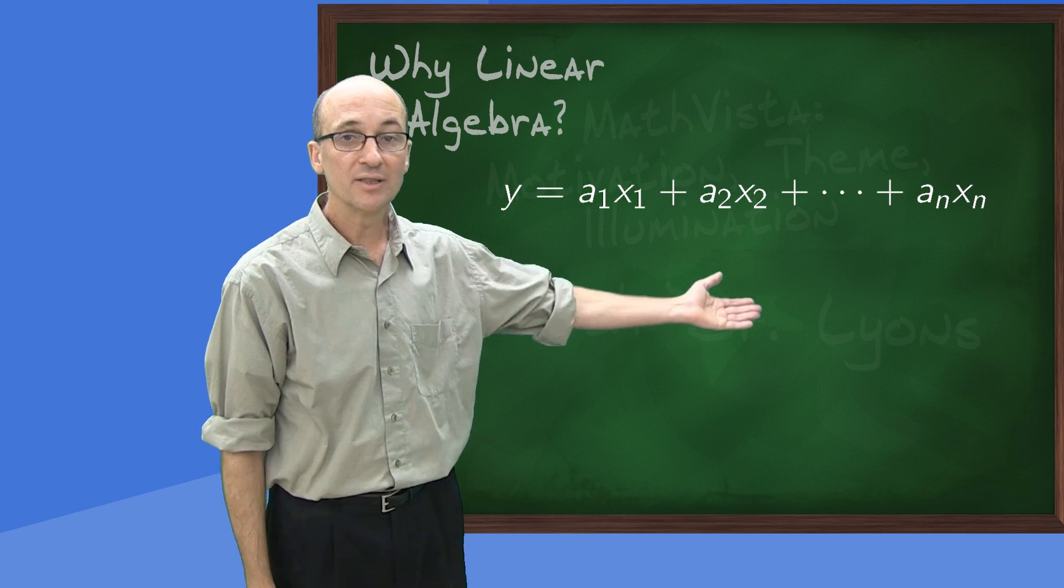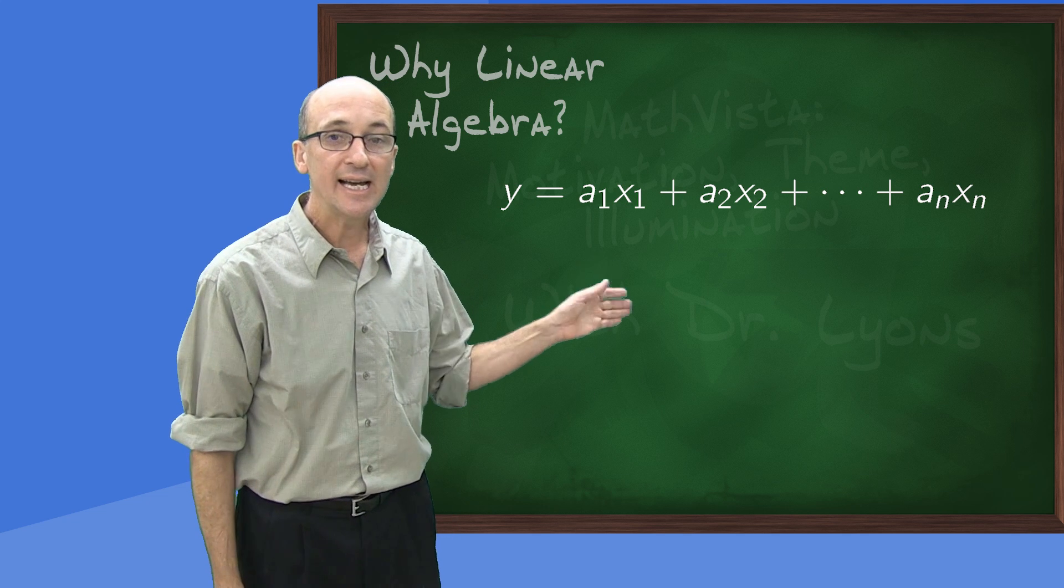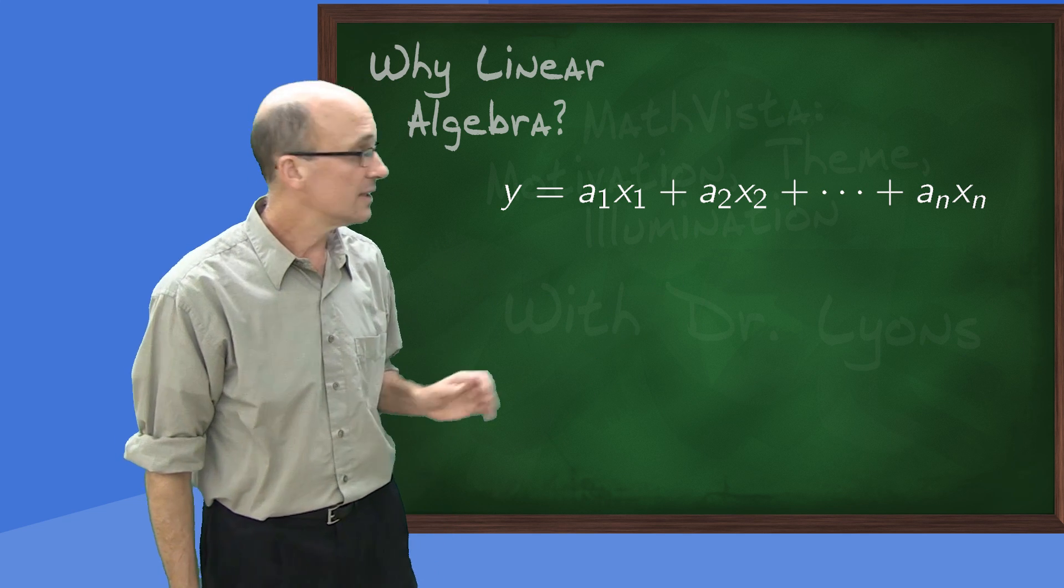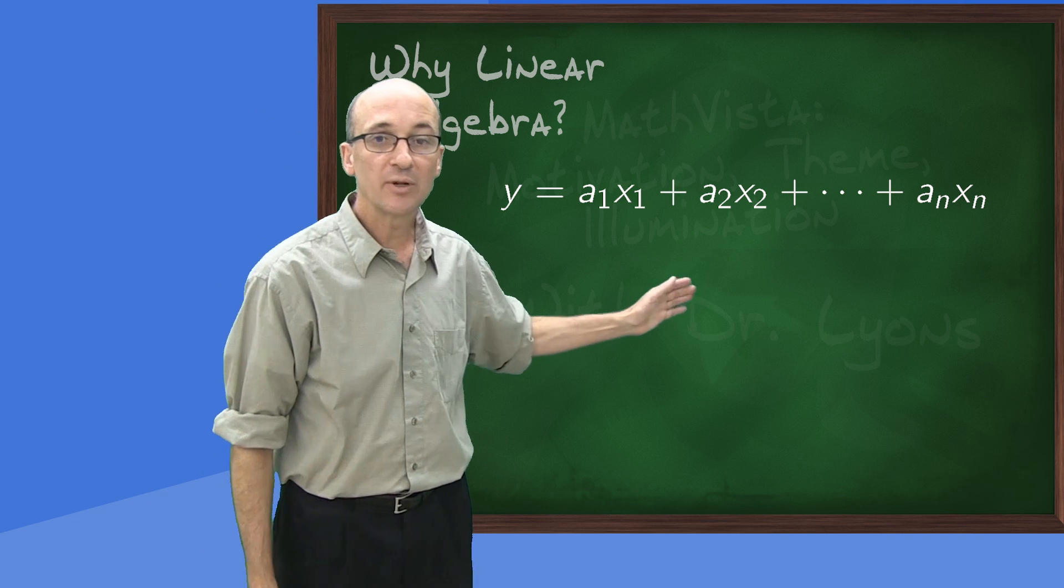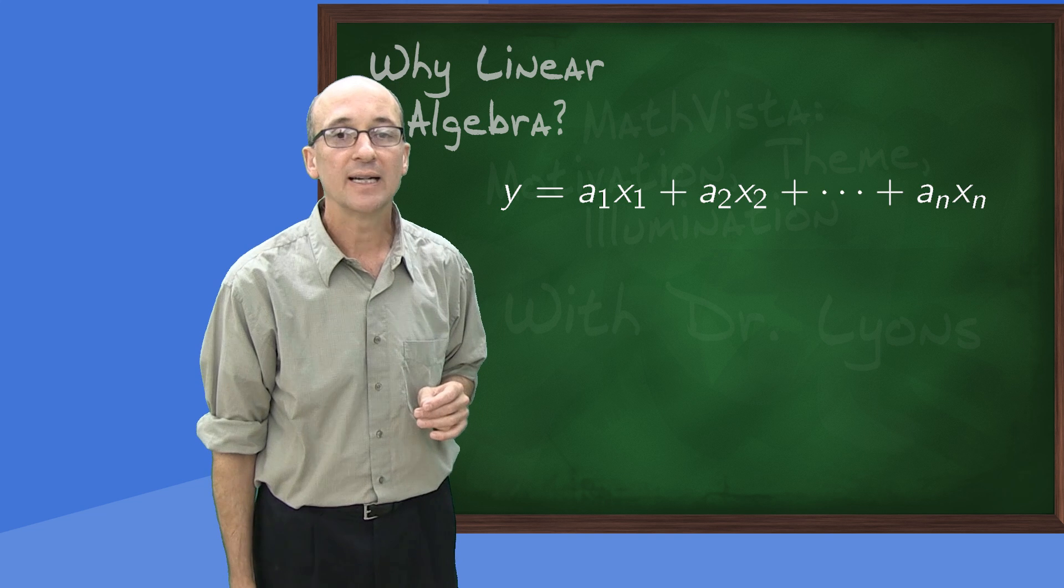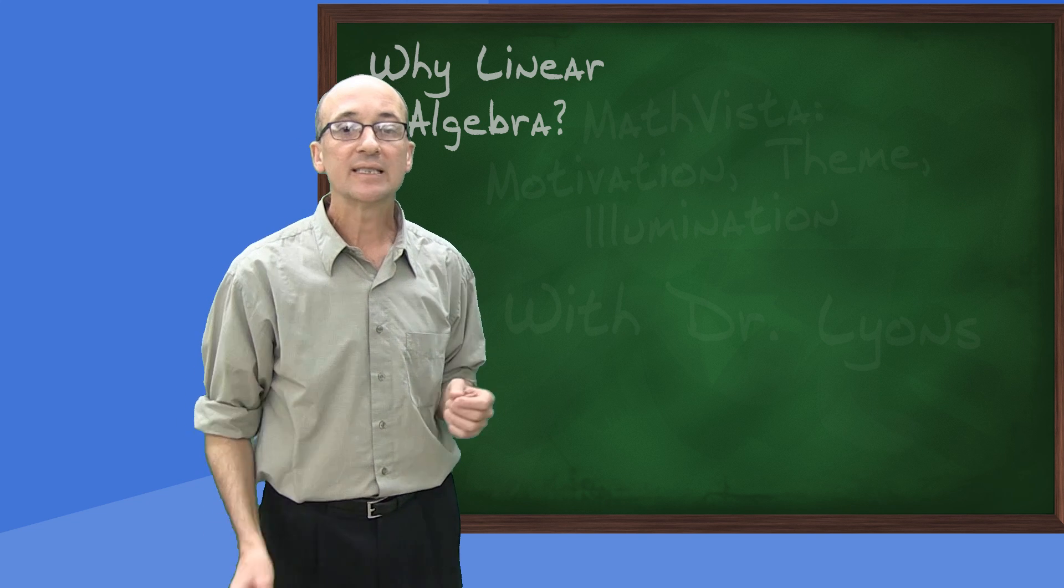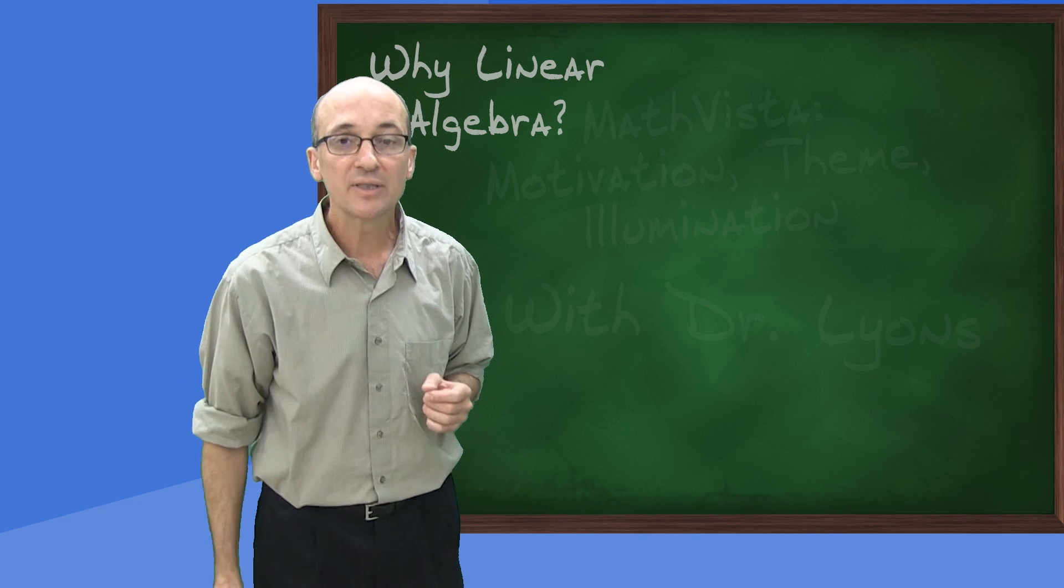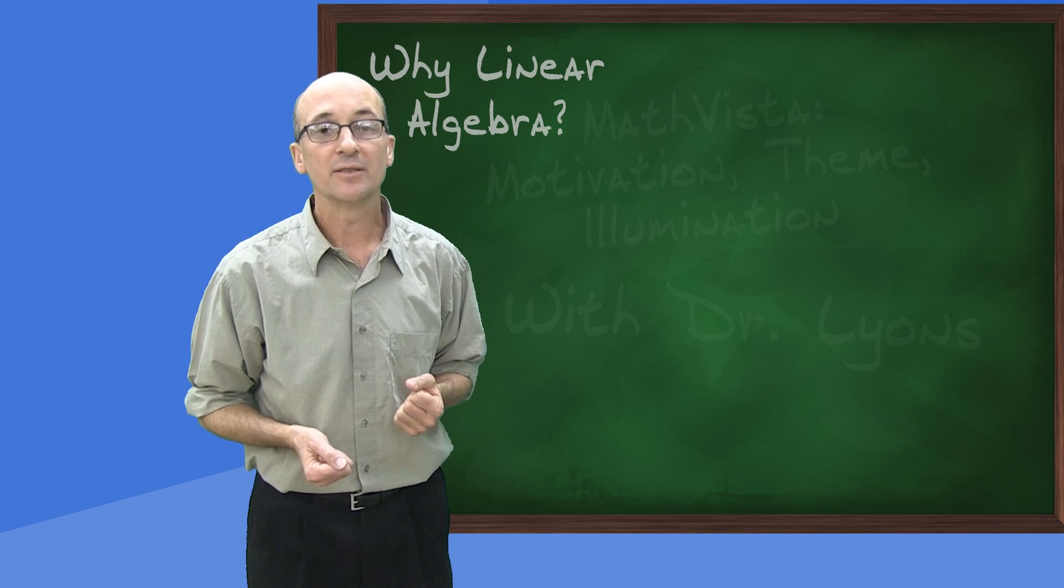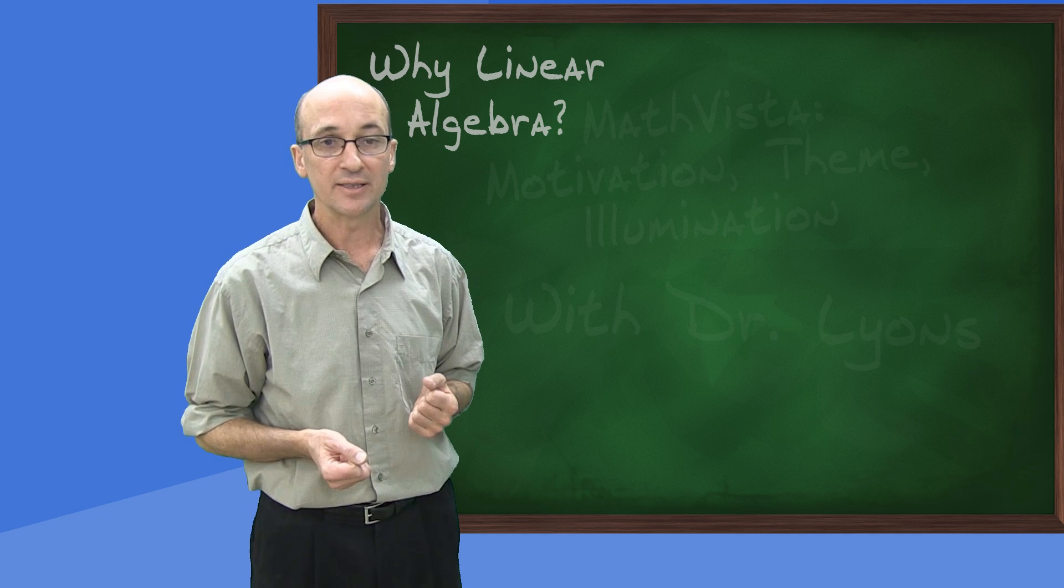Y is the output, x1 through xn are the inputs, a1 through an are constants. We call an expression like this a linear expression or linear combination of the input variables x1 through xn. The main point is that these functions are the simplest we can reasonably hope to consider and it's necessary to understand them if we want to understand more complicated functions.